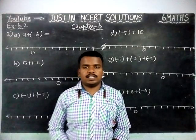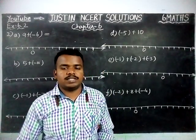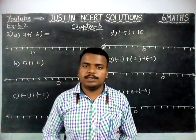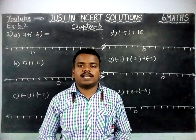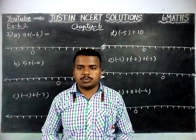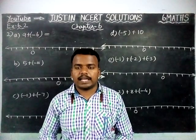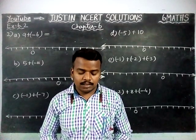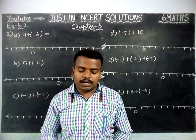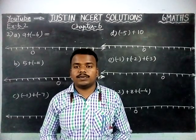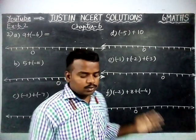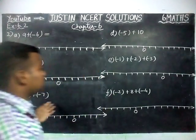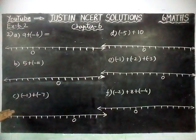Hi friends, welcome to Justine's NCRT Solutions. In this video, we are going to see Class 6 Math chapter 6, exercise 6.2, second question. The question is: use a number line and add the following numbers. There are totally 6 sums given. We are going to find the answers by using the number line.